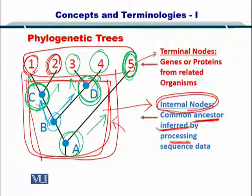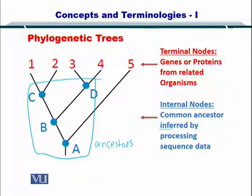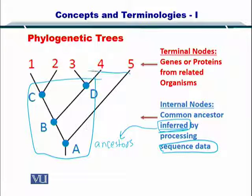The other thing to remember is the term 'inferred.' These ancestors are actually calculated and inferred — we did not know about these ancestors and their order beforehand. We inferred them using phylogenetics, specifically using the algorithms that we will discuss later, and they are purely inferred based on the sequence data placed at the terminal nodes.